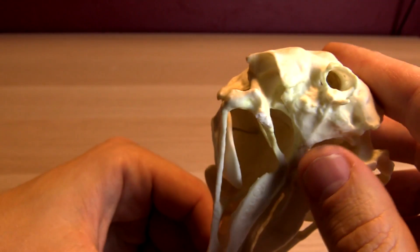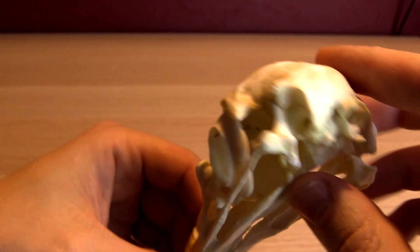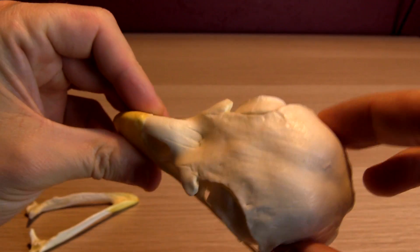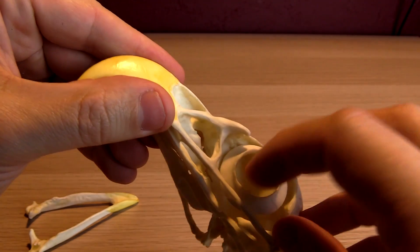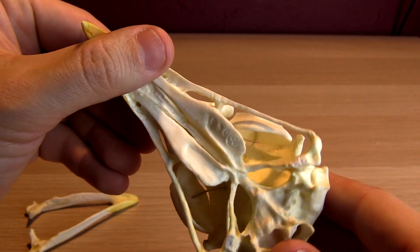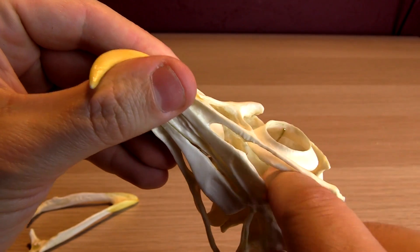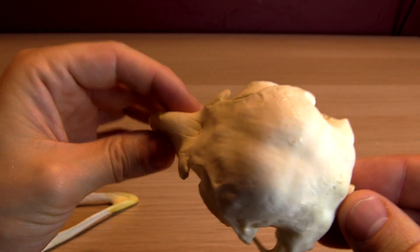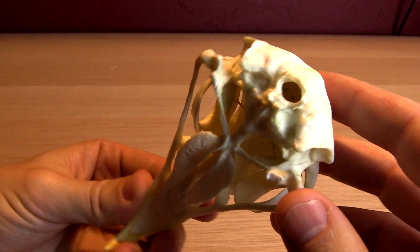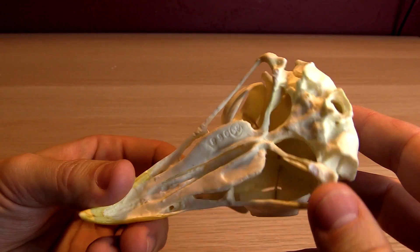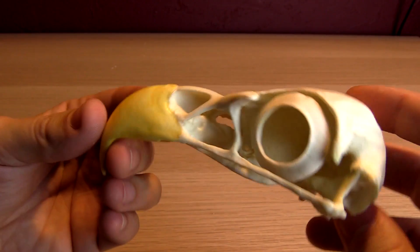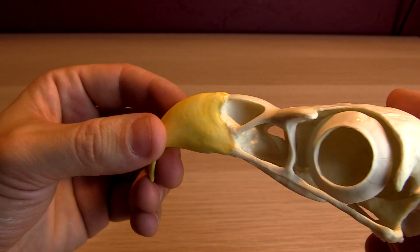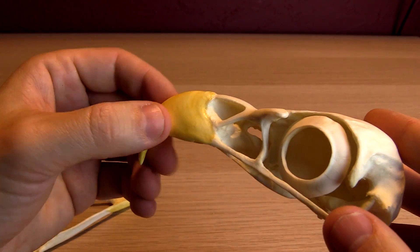Little tiny opening, opening up into a fairly large brain case. I mean, most of it's like space for the eyes. You can see there, it's just empty there, but birds do have fairly large brains compared to like a reptile or something.